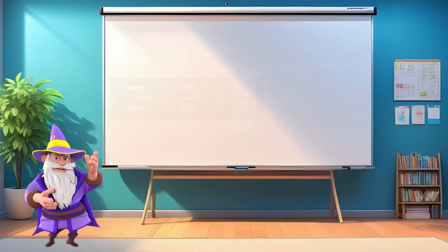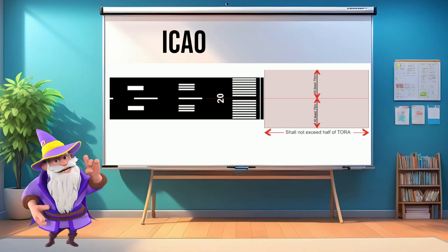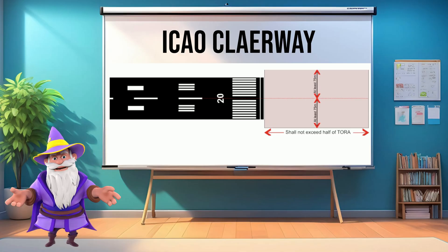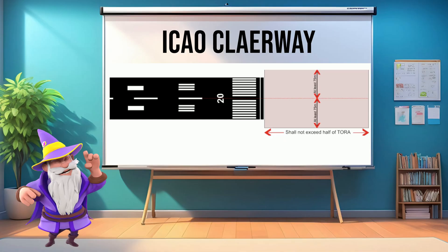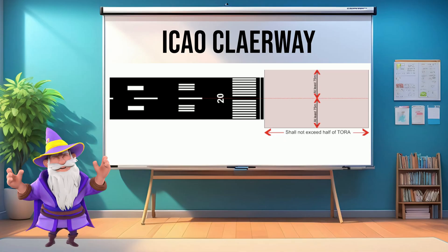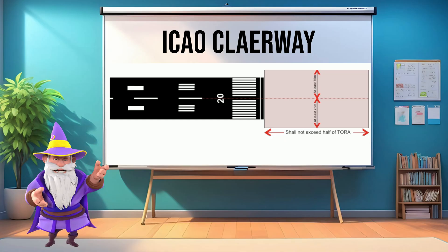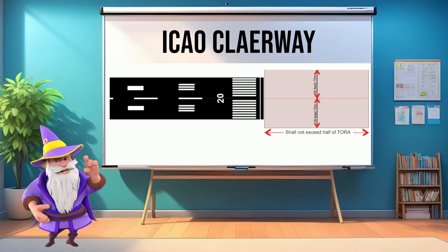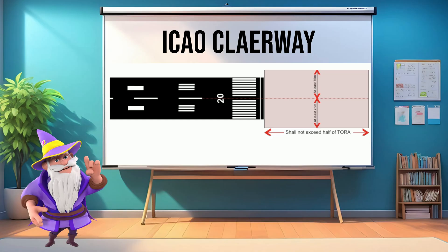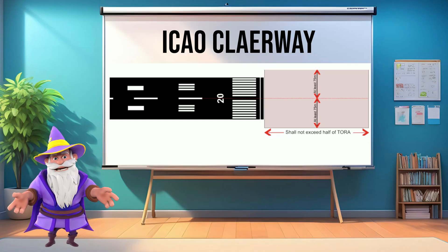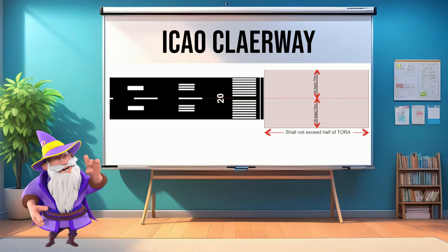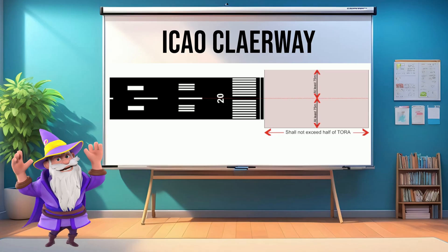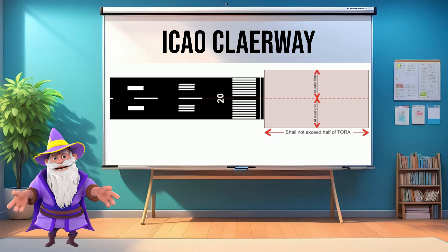Regulatory authorities like ICAO and the FAA have specific requirements for clearways. For example, an ICAO clearway shall not exceed half the length of the TORA and shall extend laterally to a distance of at least 75 meters on each side of the extended centerline of the runway.